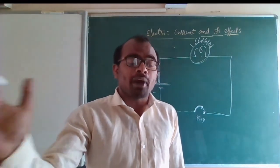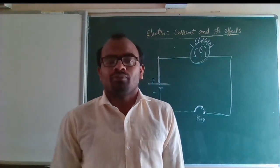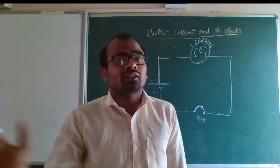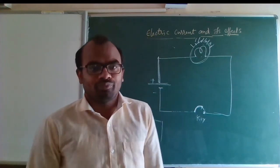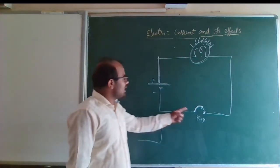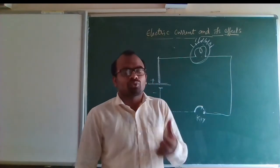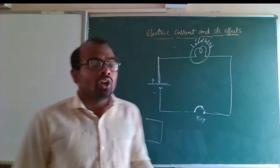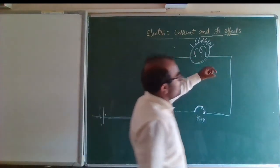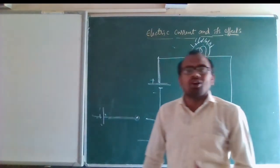If there is a path, then only current will flow. If there is no path, current will not flow. So when the key is closed, the circuit is complete — we call it a closed circuit. Then current will flow and the light will be ON.